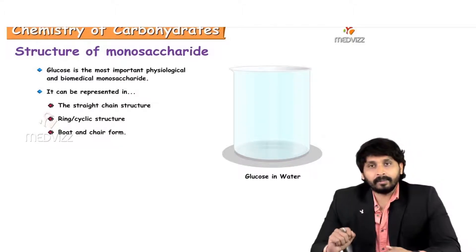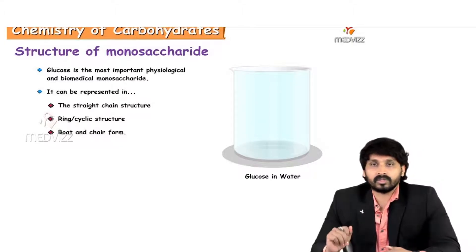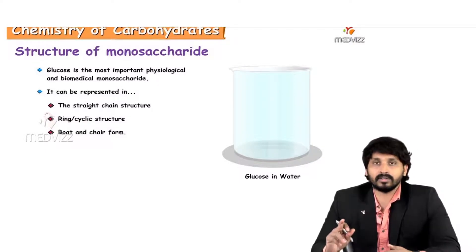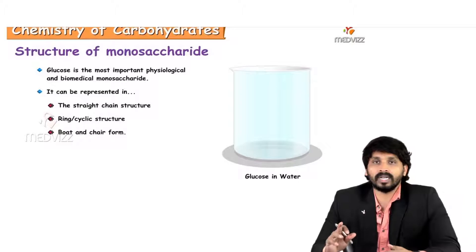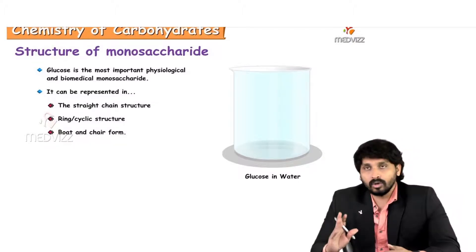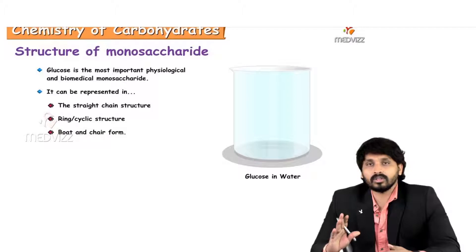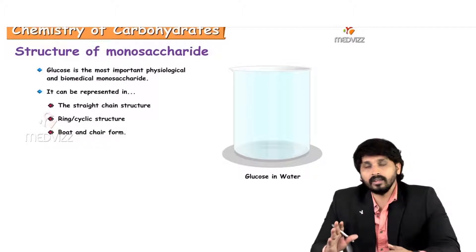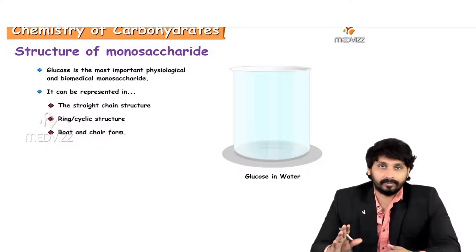Glucose can be represented in three forms: one is straight chain structure, second one is ring form, and third one is boat and chair conformations. In solutions, glucose always exists in ring form rather than in straight chain.